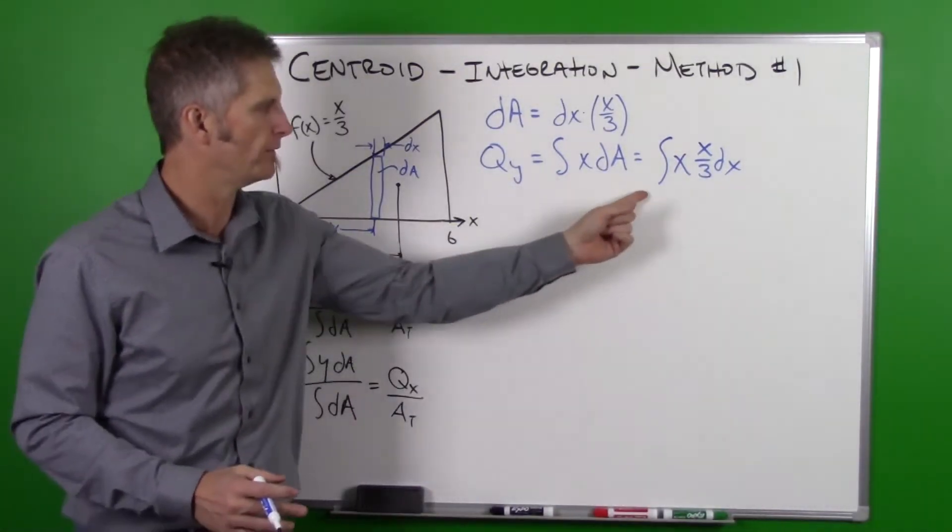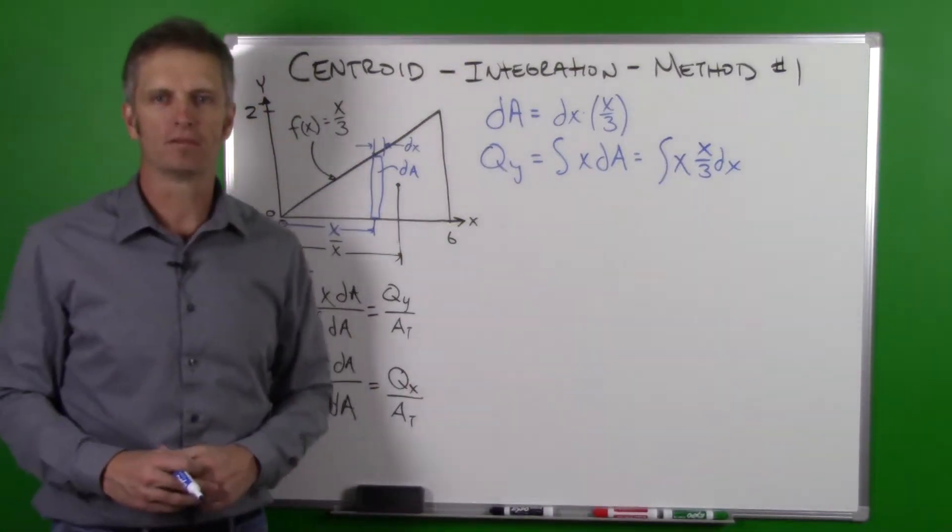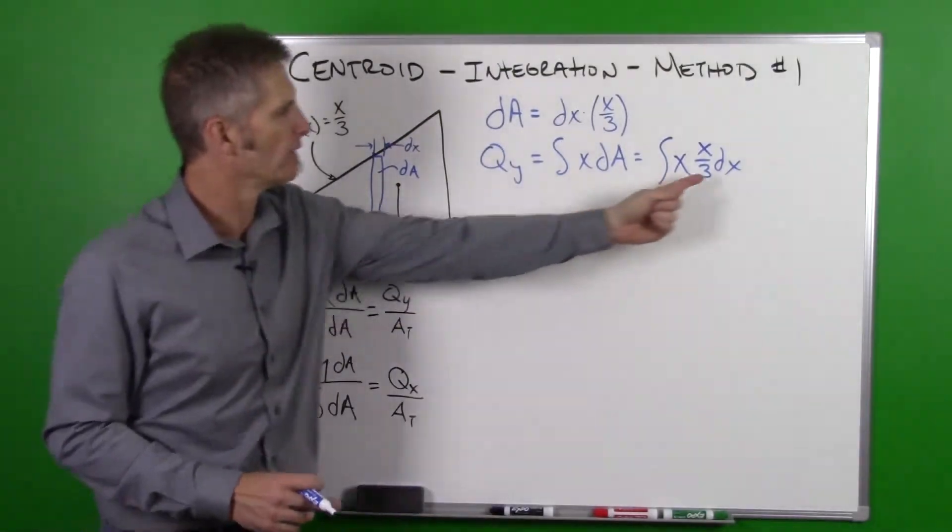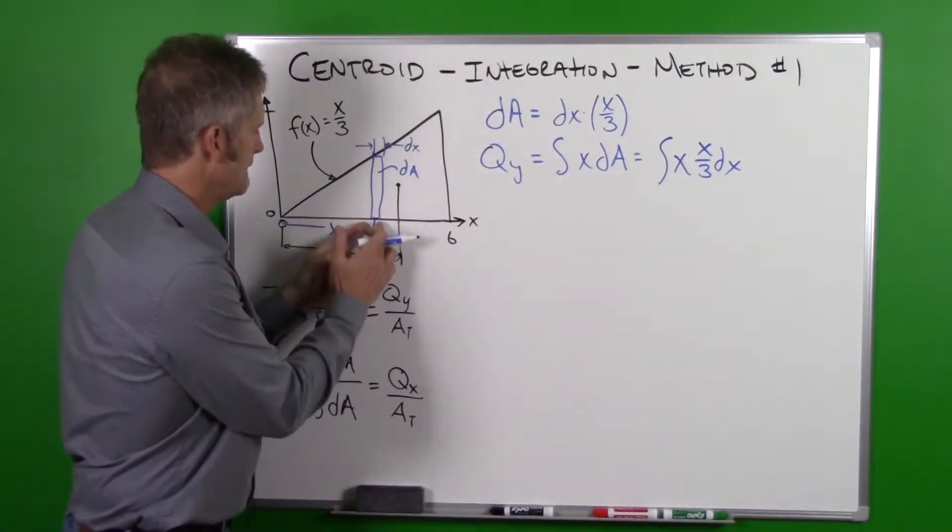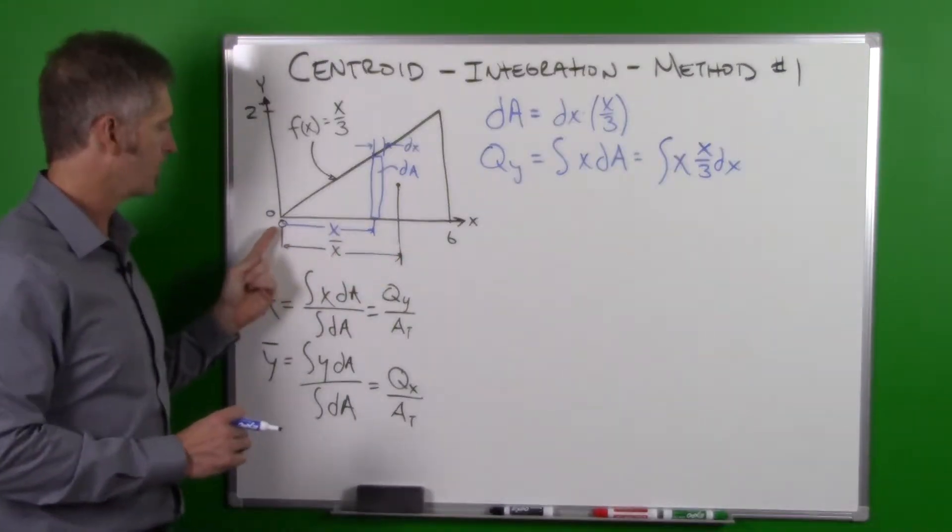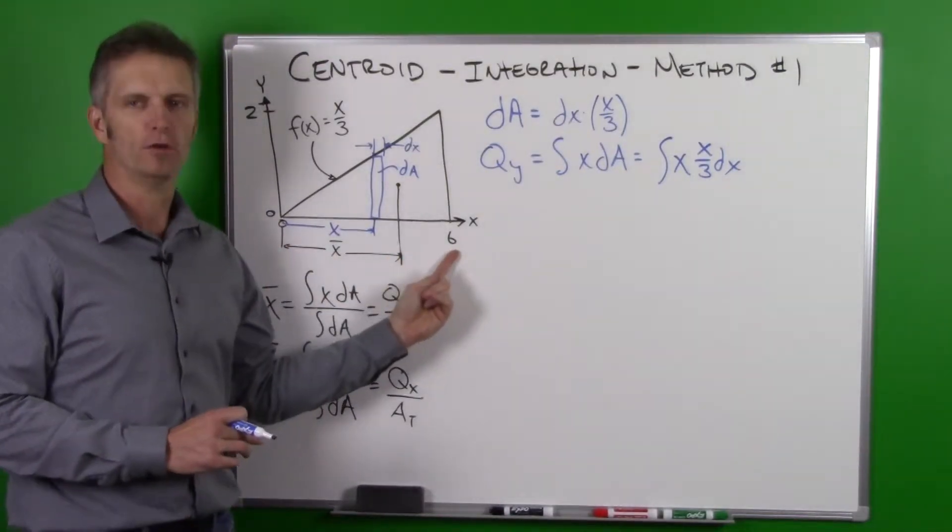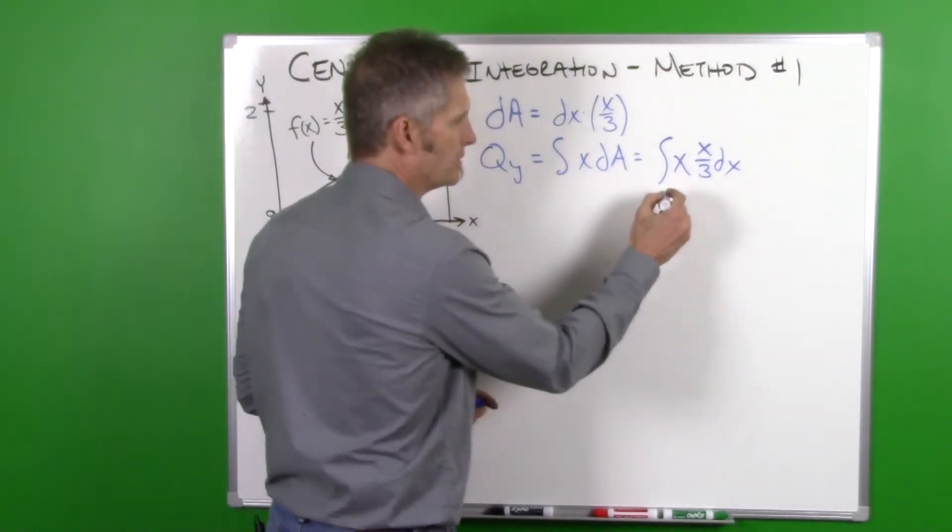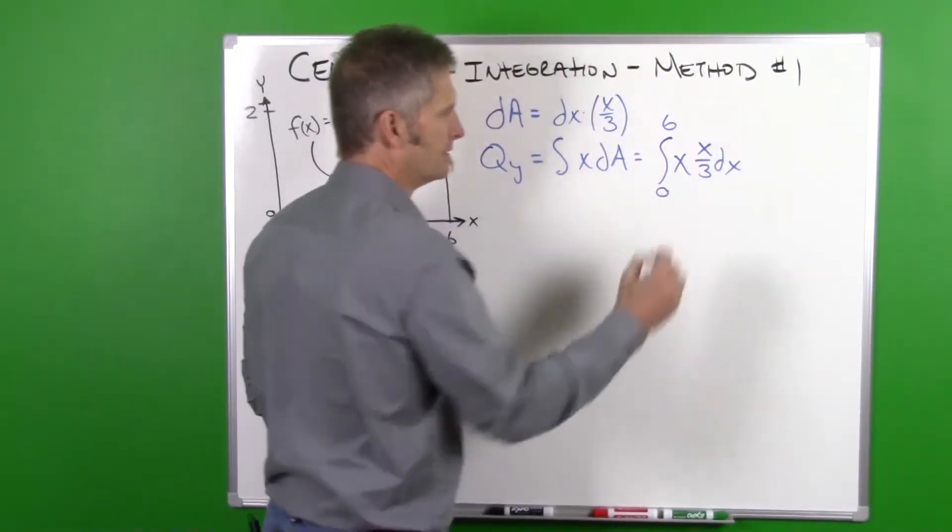Now the only thing that we don't have here is that we need to put our limits of integration. In this case we are using dx, so we're going to integrate along the x-axis. So we go from 0 all the way to 6. So our limit of integrations is now going to be 0 to 6.